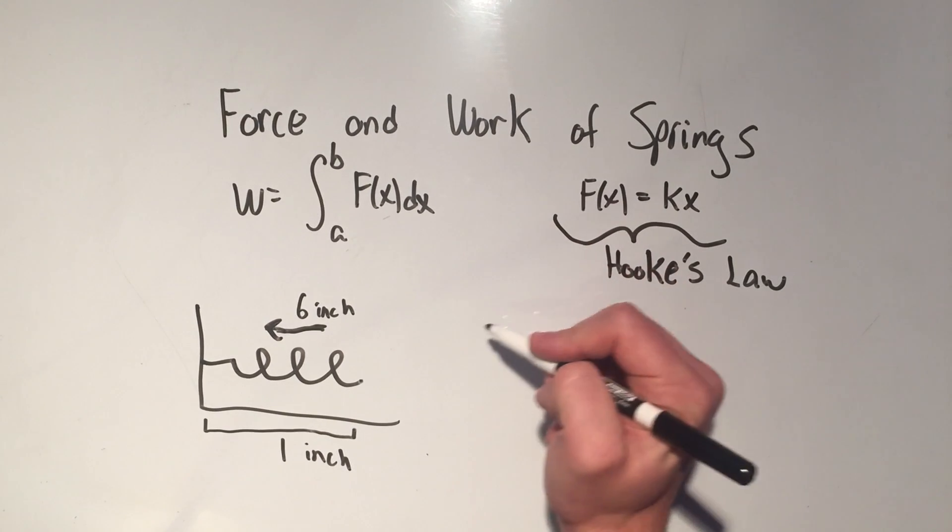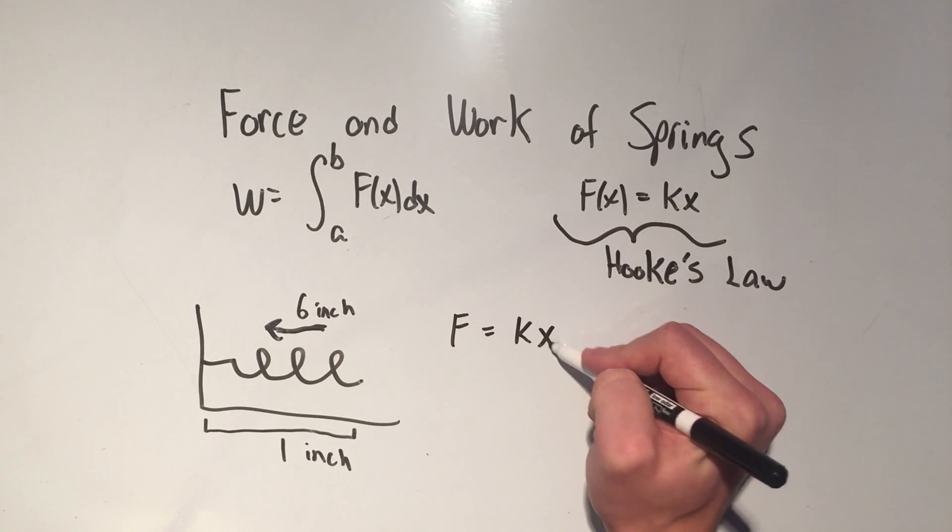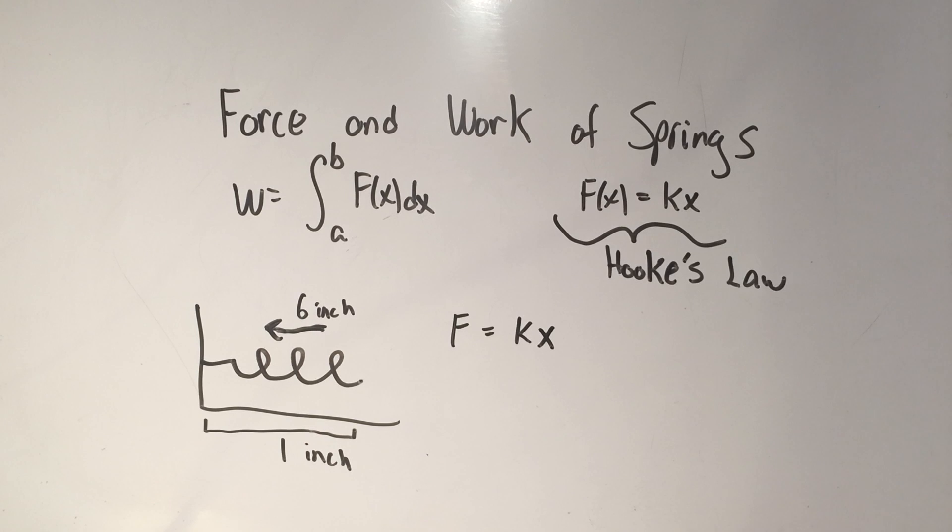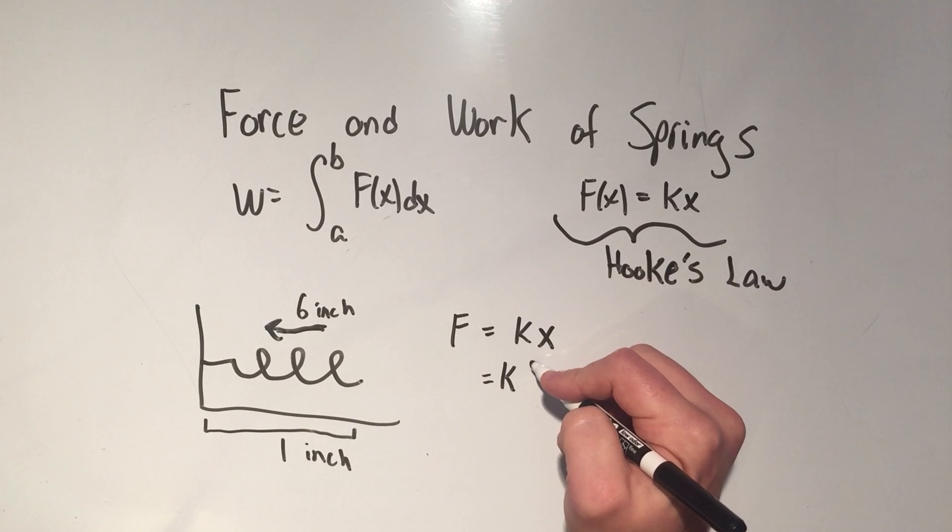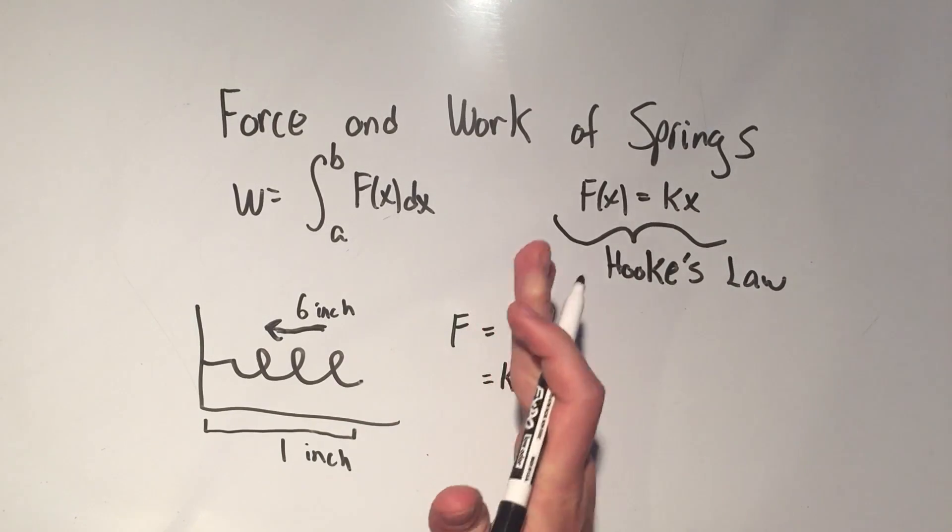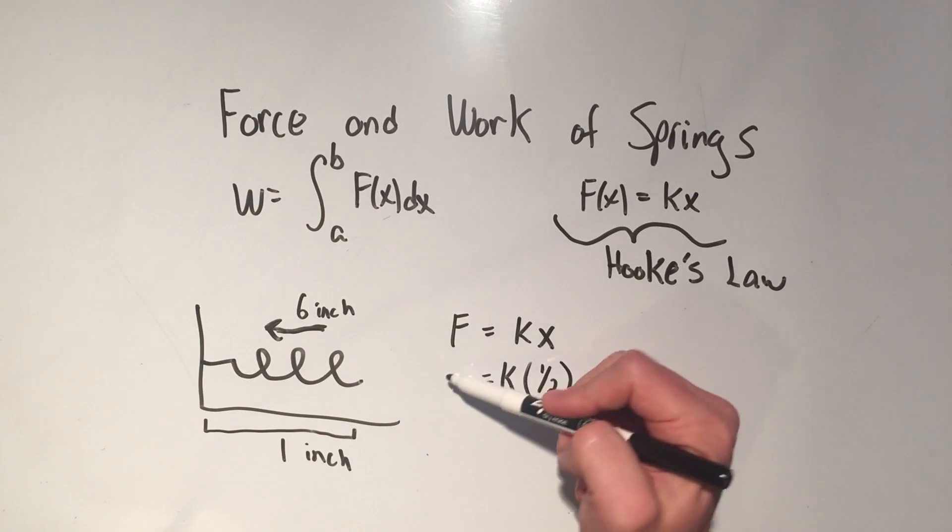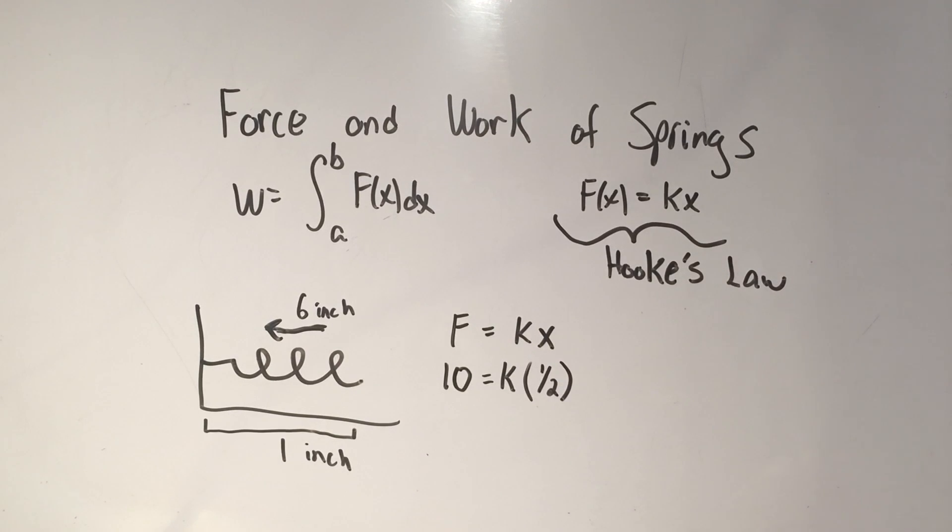So basically, if I use this equation, force equals kx, I know that if I want to compress the spring by half, or in other words push it in 6 inches, that means the displacement of the spring is 1 half, or this could be negative 1 half if I'm pushing it in, but it doesn't really matter. I said that the force required to do that was 10, which means I can solve for my k by multiplying by 2, and I'm getting that my k is 20.